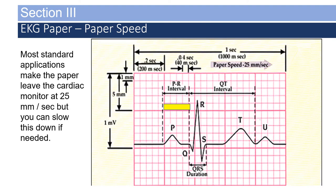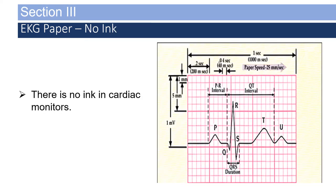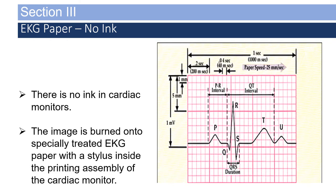For most cardiac monitors, the cardiac paper leaves the monitor at approximately 25 millimeters per second, but you can slow it down or speed it up if needed. Cardiac monitors do not contain ink or ink cartridges — the image is burned onto specially treated EKG paper with a stylus inside the printing assembly.